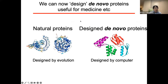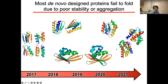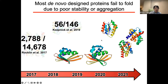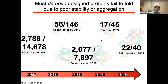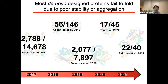We can now design de novo proteins that are useful for biology or medicine. Of course, evolution has been designing many natural proteins, but we can also design de novo proteins using computational power. Other researchers have been designing many de novo proteins, but unfortunately the success rate was around 50% or less. The major cause of failure is low folding stability, because low folding stability causes low expression level, low stability, or aggregation. If we could establish a new model for predicting folding stability more accurately, we should be able to improve the success rate of de novo protein design.